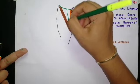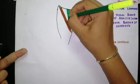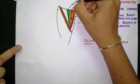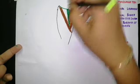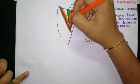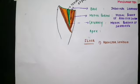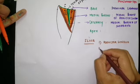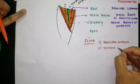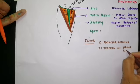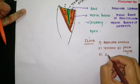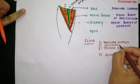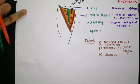Lateral to the pectineus is the tendon of psoas major muscle. Lateral to the tendon of psoas major is the iliacus muscle. So the four structures forming the floor are: adductor longus, pectineus, tendon of psoas major, and iliacus.